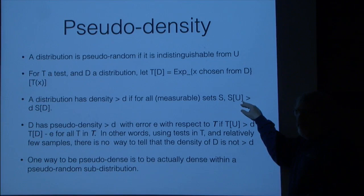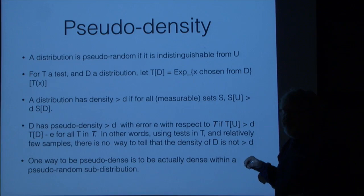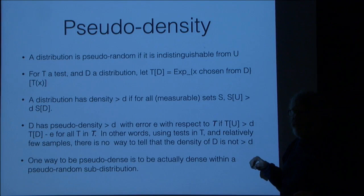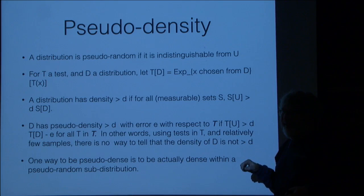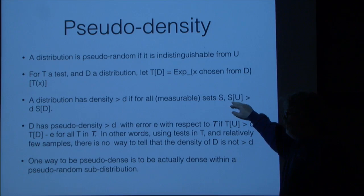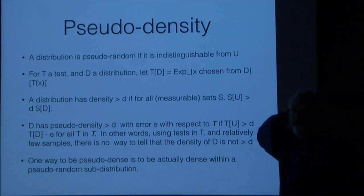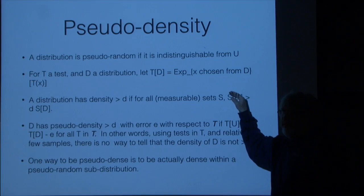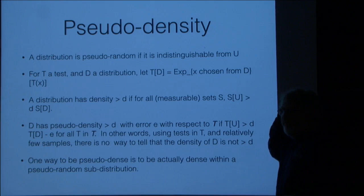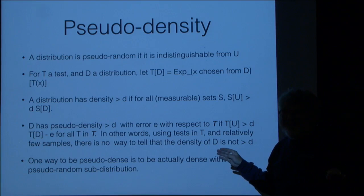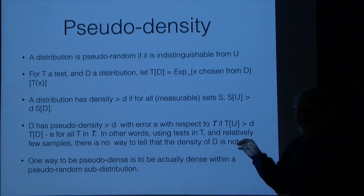The terminology: if we have a test and a distribution, we let T of that distribution be the expected value; since this is a zero-one valued test, that's just the probability that the test says one. Density here refers to the lower bound on the average of the density function — a distribution has actual density D if it's spread over at least a D fraction of space. There are only so many words to go around, so sometimes we have to reuse them. Small D is a number between zero and one.